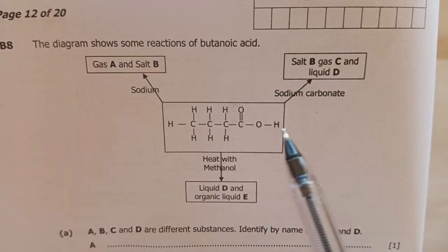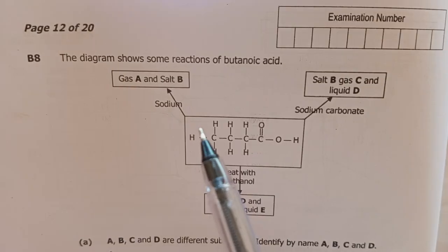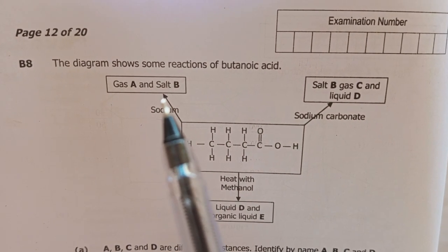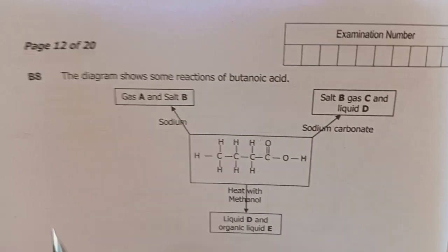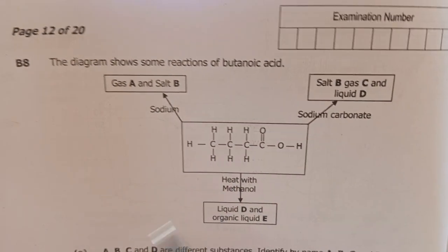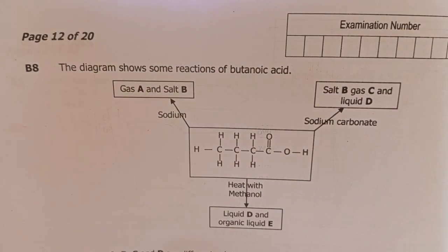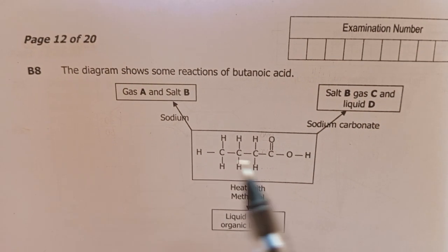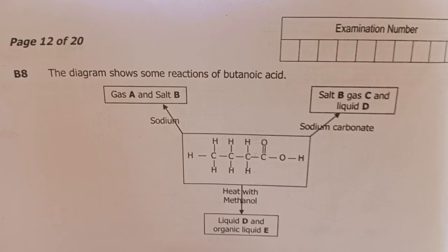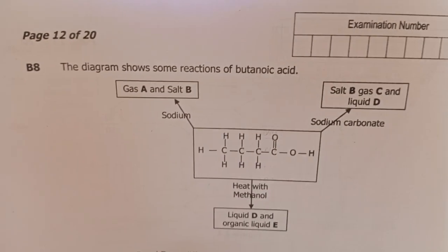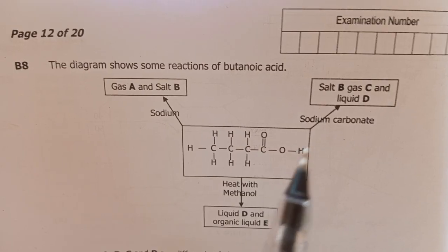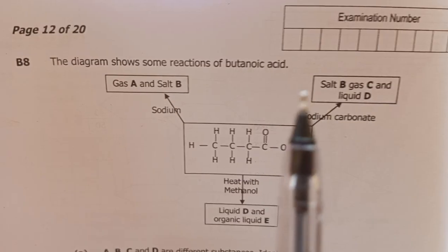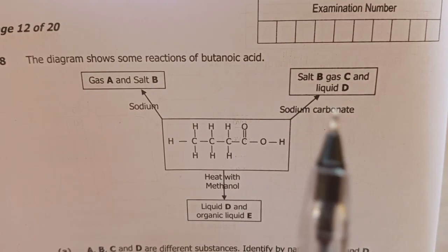This is the structural formula here. This is butanoic acid, then you have gas A and salt B. Let's unpack what this is about. We have butanoic acid reacting with sodium metal producing gas A and salt B.